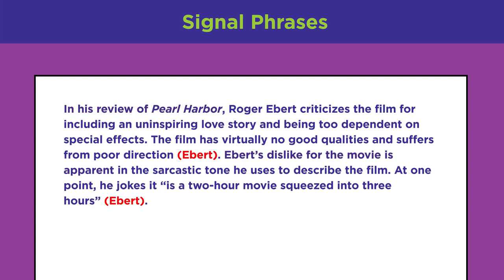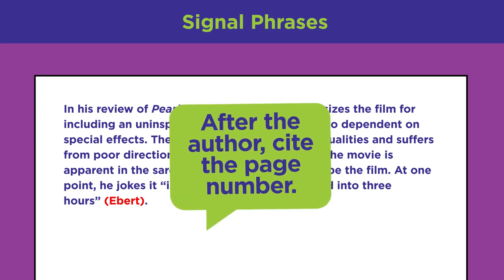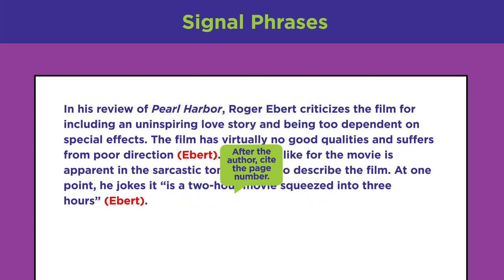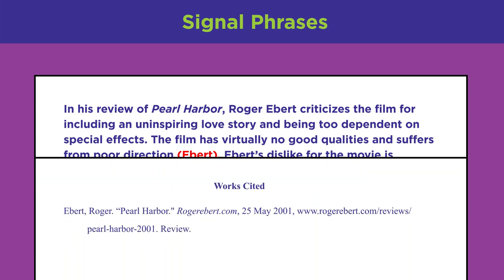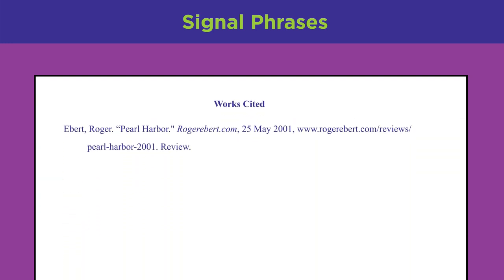Also notice that Ava added in-text citations in two places to clarify the owner of the ideas. Normally, after the author of a source has been introduced, you can just cite the page number. However, since there are no page numbers on Ebert's website, Ava was correct to only list the author's name. Even film reviews need full citations in your bibliography at the end of your paper.